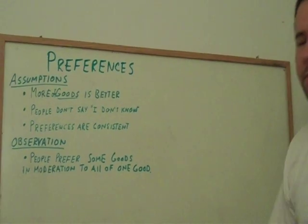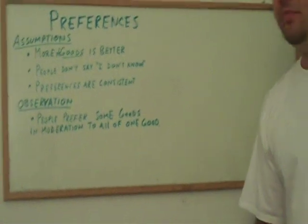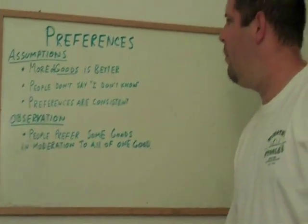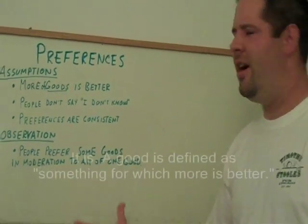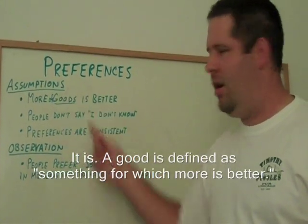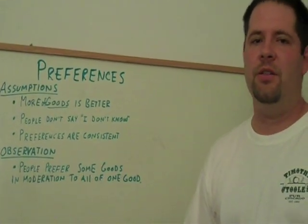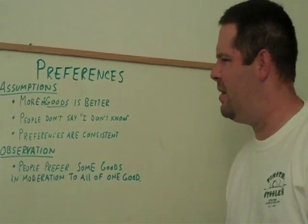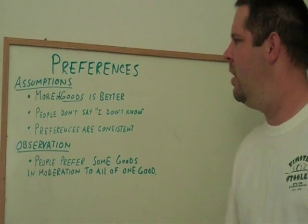The first assumption is that more of goods is better. Now, that seems just tautological. If something is what we would call a good, it obviously has to be better. So that one is kind of hard to disagree with.